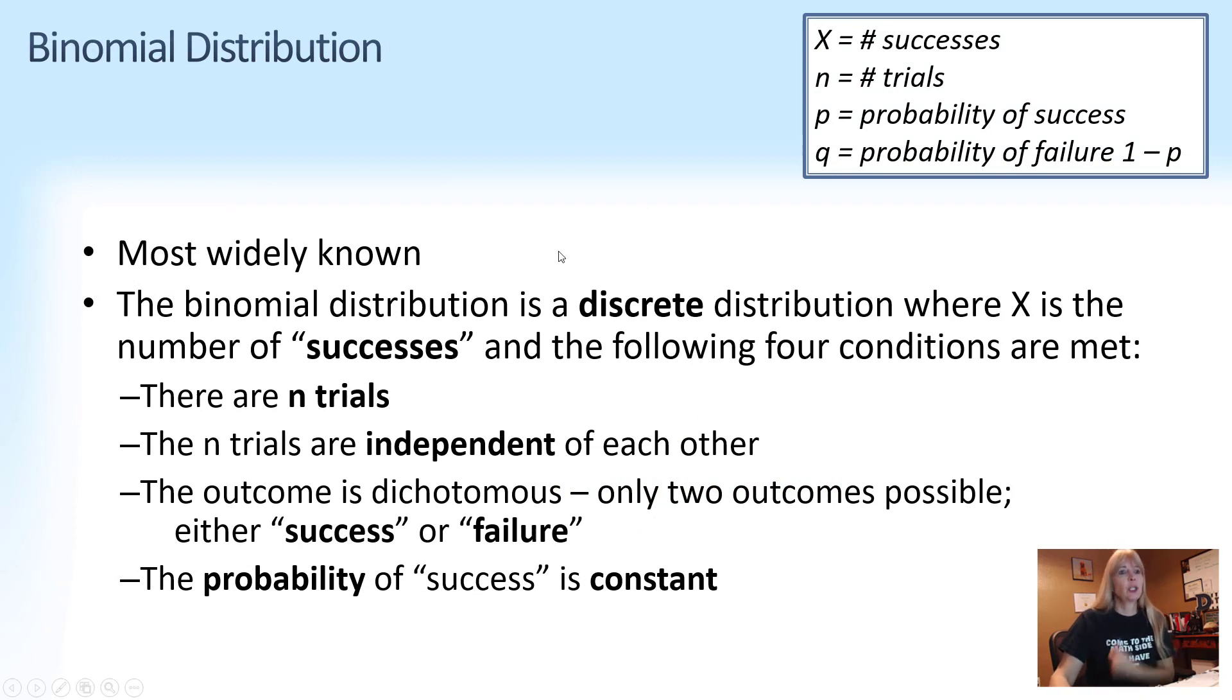The binomial distribution by far of discrete distributions is used the most. So discrete countable. You have a certain number of trials that are independent of each other. If I flip a coin and I get heads on the first flip, it has nothing to do with my outcome on the second flip. Binomial two outcomes, success or failure.